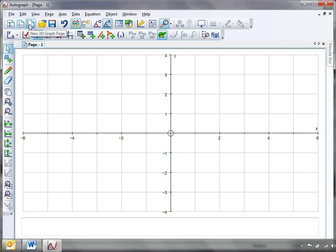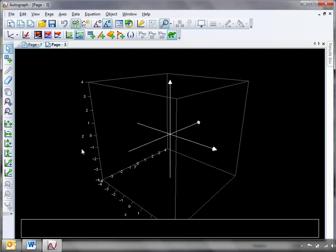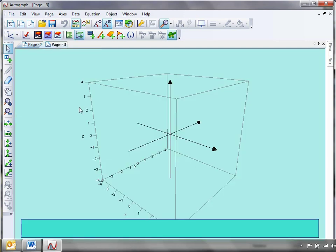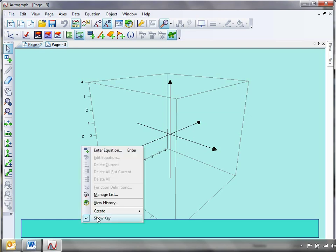First thing we're going to need a bit of 3D, so a new 3D graph page. Now I'm a big fan of the black background, but I tend to find that it's a little tricky to see on the interactive whiteboard. So I'm going to move to this medium background, which works quite well. And I'm also going to just right click and get rid of the key at the bottom.